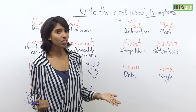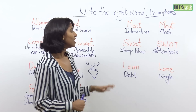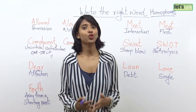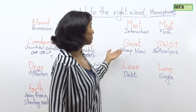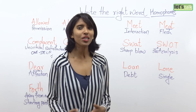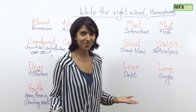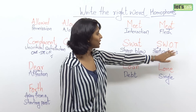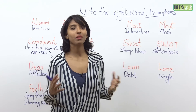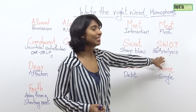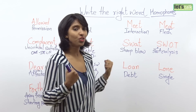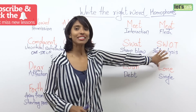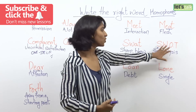Moving on to the next one: swat versus SWOT. 'Swat,' according to the Oxford Dictionary, means a sharp blow — anytime you're hitting something very hard, you're giving it a swat. This term is also used for a group of soldiers, because they are expected to give a sharp blow to their enemies or to a critical situation. But there's another form, SWOT, which stands for Strength, Weakness, Opportunity, and Threat — a short form used by many companies for a 360-degree analysis to assess strengths, weaknesses, areas of improvement, and threats.